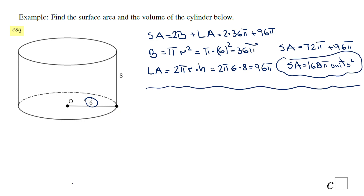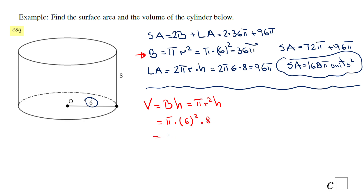For the volume of the cylinder, we use area of the base times the height, and since the base is a circle: pi r squared times h. So it's pi times 6 squared times 8, which is pi times 36 times 8. We just need to do 36 times 8 equals 288, so the volume is 288 pi cubic units.